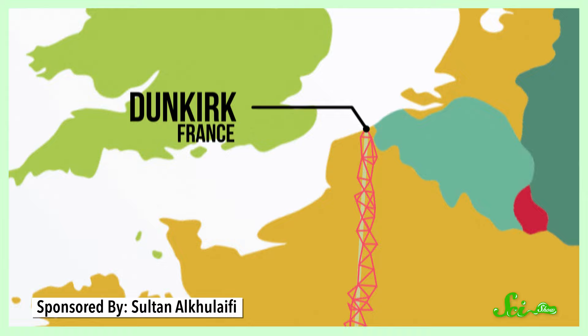Instead, they decided this unit would be a fraction of the circumference of the Earth, specifically the distance from the equator to the North Pole passing through Paris, divided by 10 million. A group of surveyors ended up measuring just between Dunkirk, France, and Barcelona, Spain.